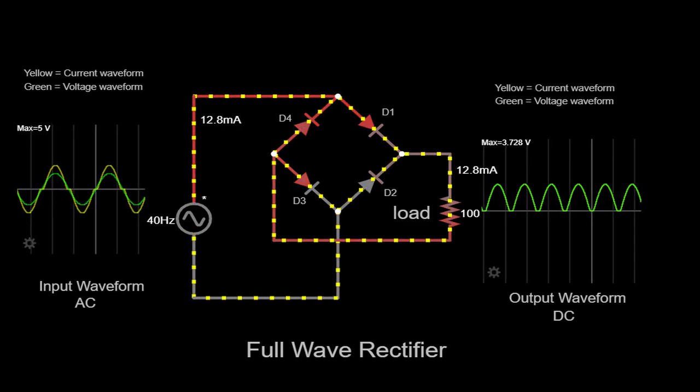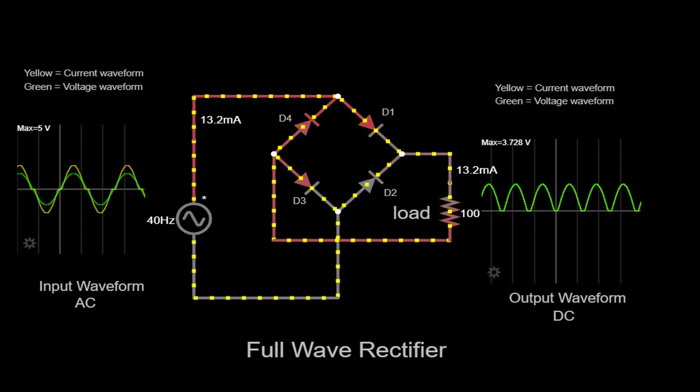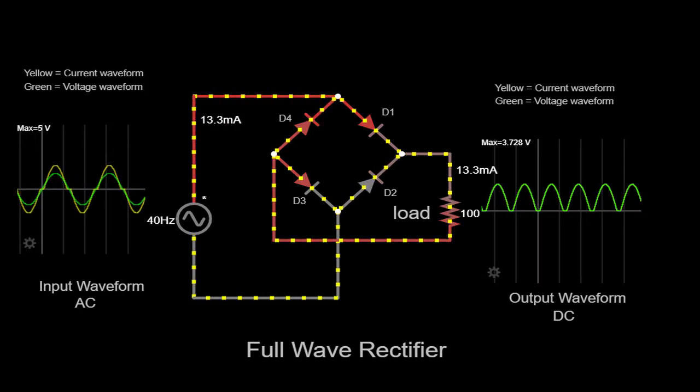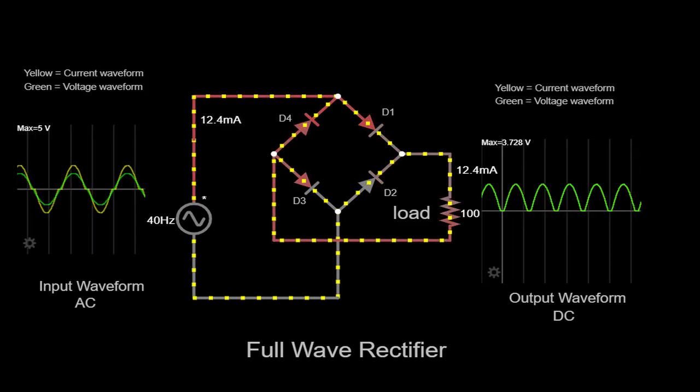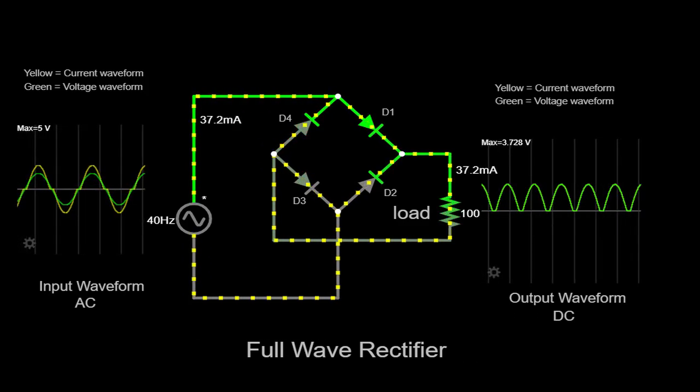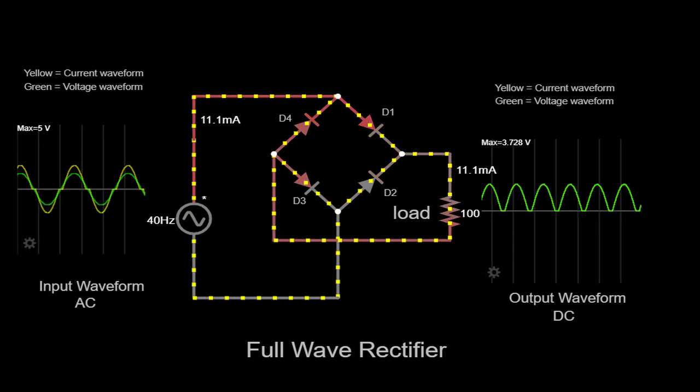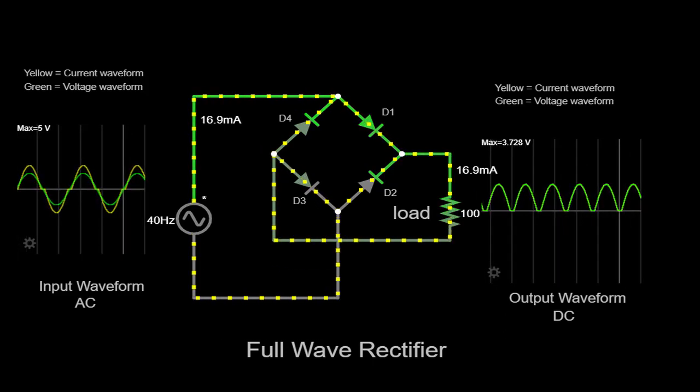However, it's important to note that the output voltage of a full-wave rectifier is not a perfectly smooth DC voltage. It still contains some ripples or variations. This is due to the fact that the rectification process is not completely ideal. To further smoothen the output and reduce these ripples, additional circuitry like capacitors can be employed.